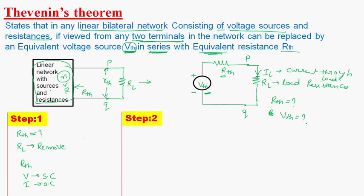In the second step, we will find VTH. To find VTH, we again remove RL. VTH is the open circuit voltage appearing across the two terminals. We find VTH simply by removing the load resistance RL.